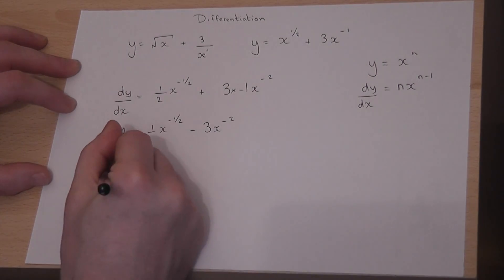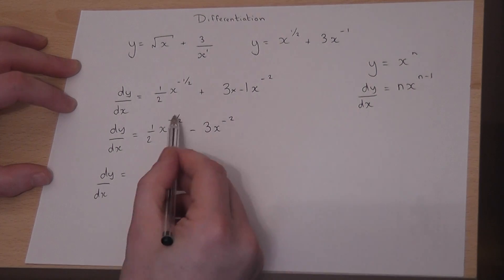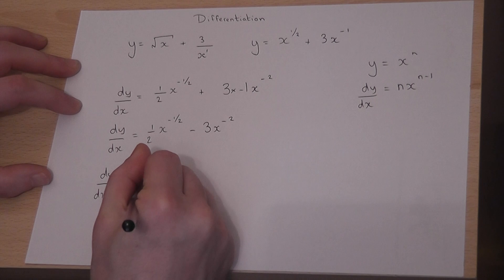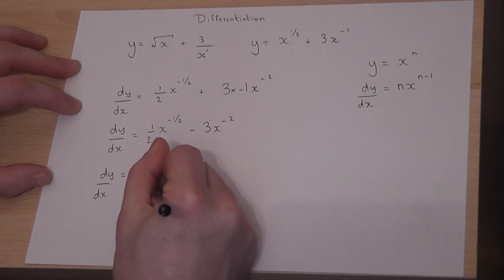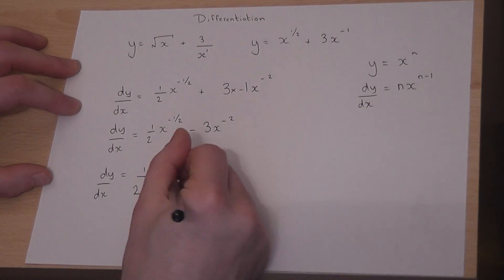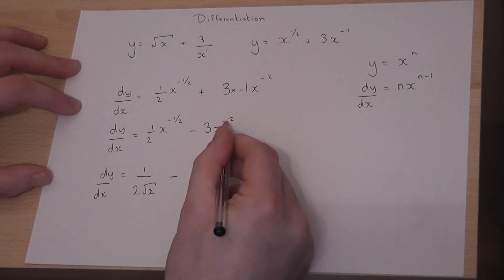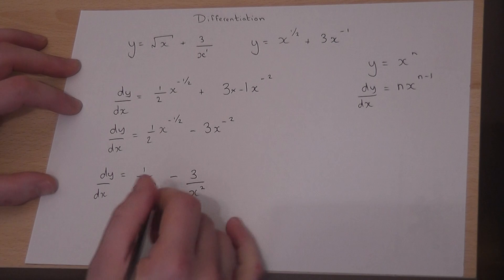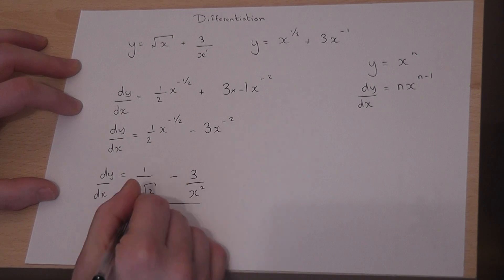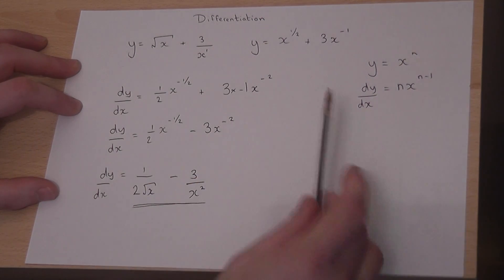And the very final step you may take is the minus power here means over, so it means 1 over. A half means square root, so it's over the square root of x. And then here, the minus power means over, so it's over x to the power of 2. And that is the final answer for this particular question.